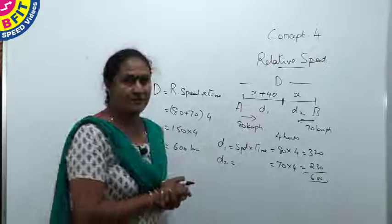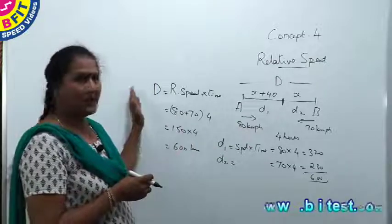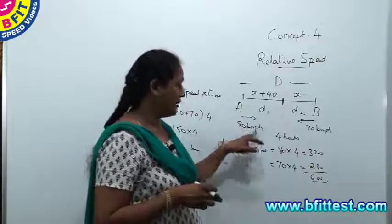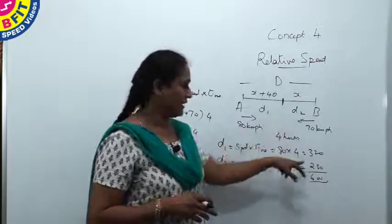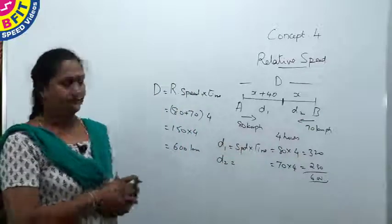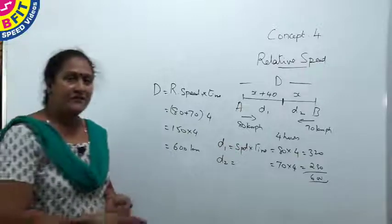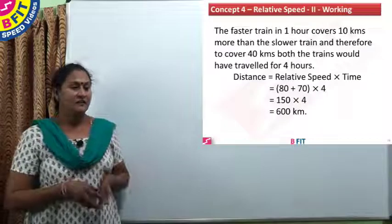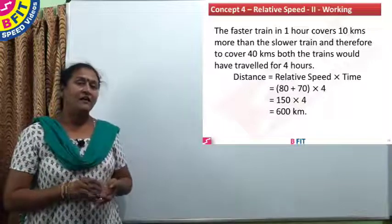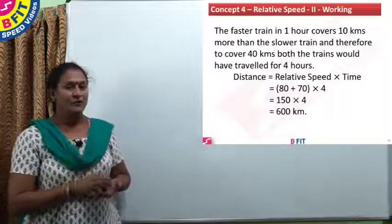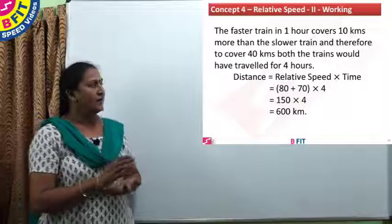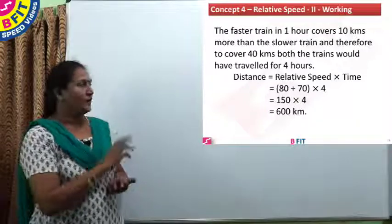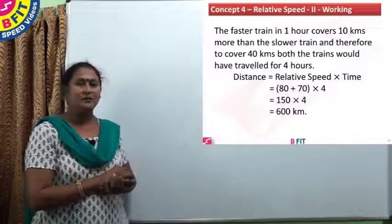When moving in opposite direction, relative speed is the sum of their speeds. Distance = relative speed × time = 150 × 4 = 600 kilometers. Alternatively, distance covered by the first train is speed × time = 320, and by the second train is 280, and adding gives the same 600 kilometers. So 150 × 4 = 600 kilometers is the distance between the two places.